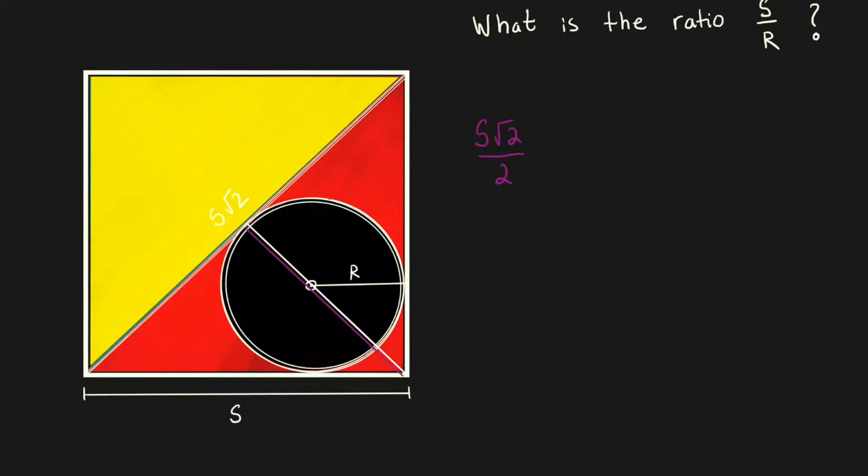That purple line is composed of the radius of the circle and this unknown length question mark. But that question mark is just again the hypotenuse of a square with sides r giving in the length of r root 2 using Pythagorean theorem.